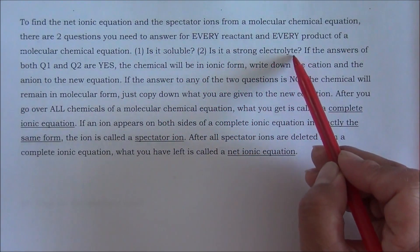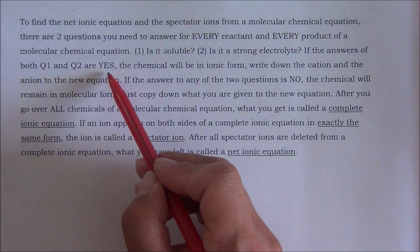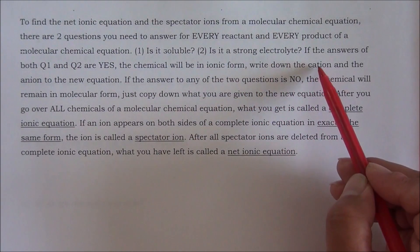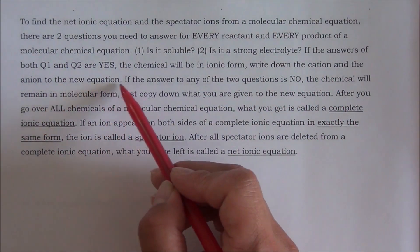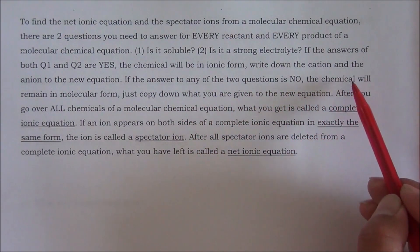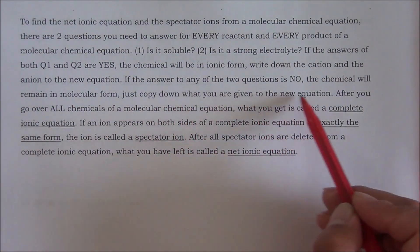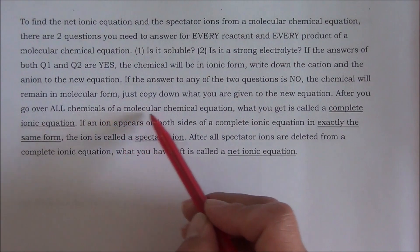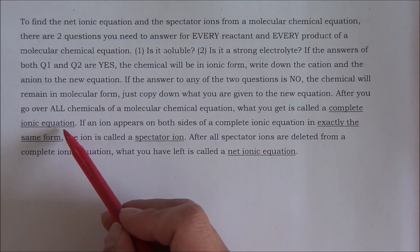Question number two: Is it a strong electrolyte? If the answers to both question one and question two are yes, the chemical will appear in ionic form — write down the cation and the anion to the new equation. If the answer to either question is no, the chemical will remain in molecular form — just copy it to the new equation. After going over all chemicals, what you get is called a complete ion equation.